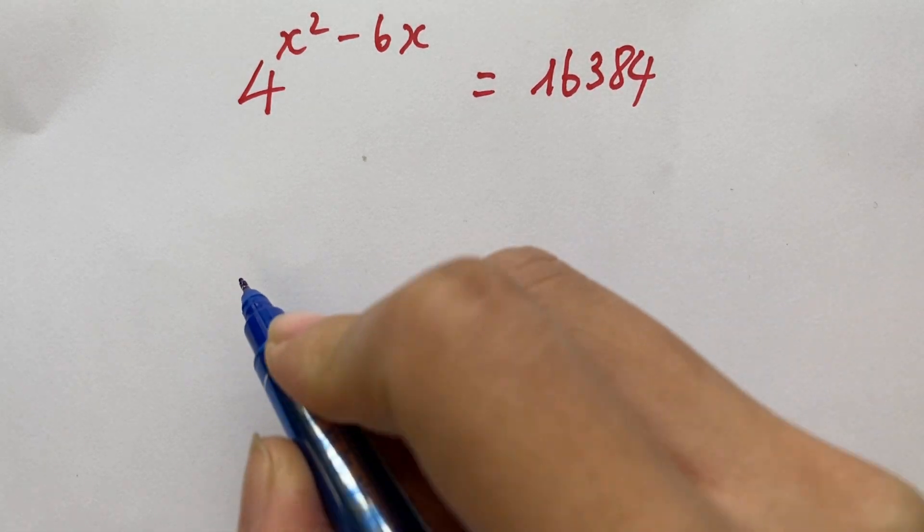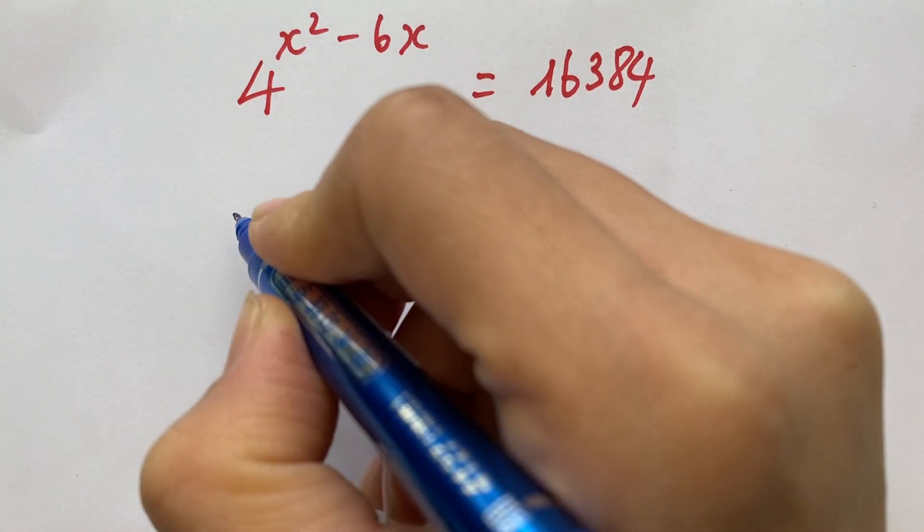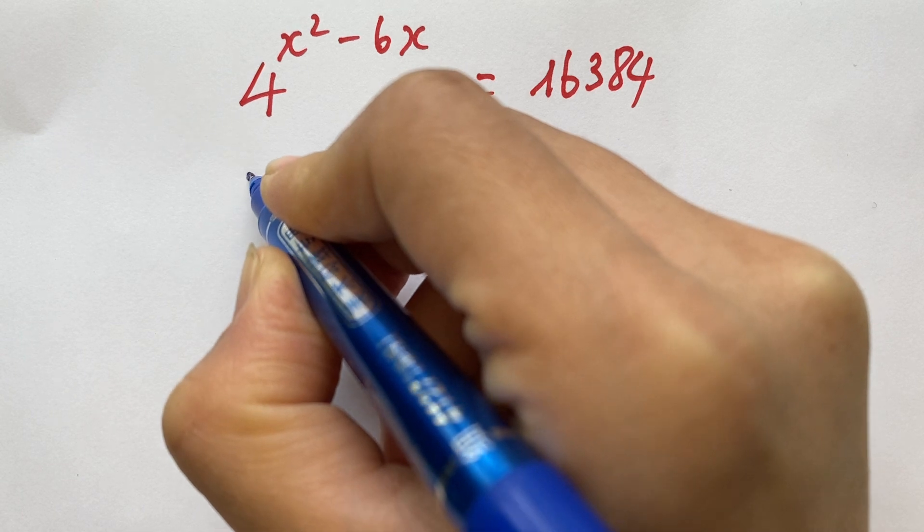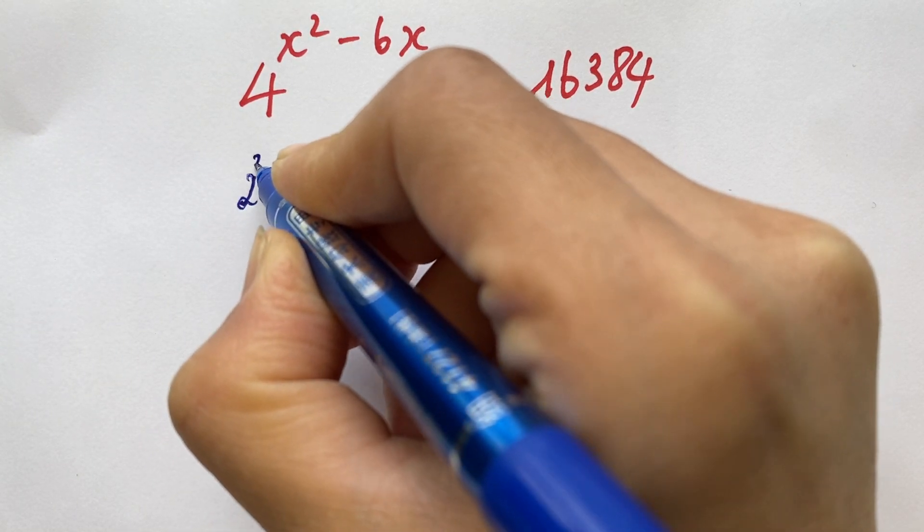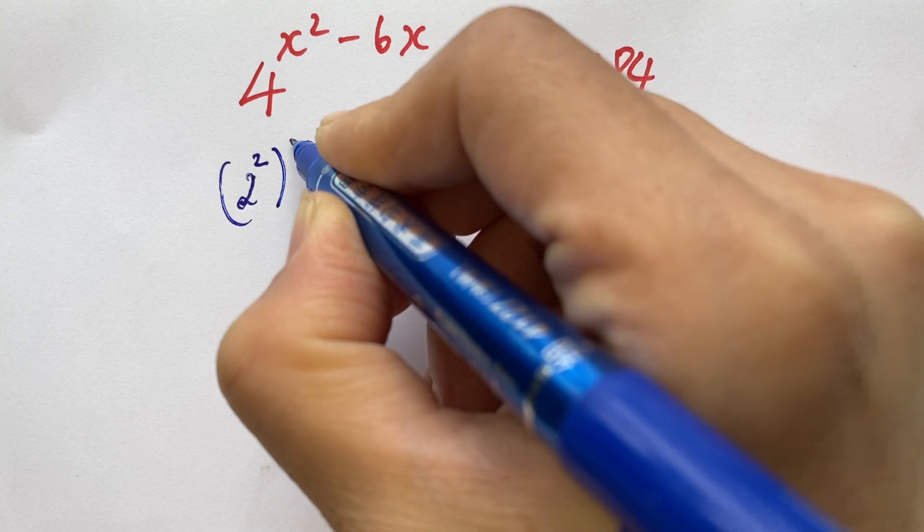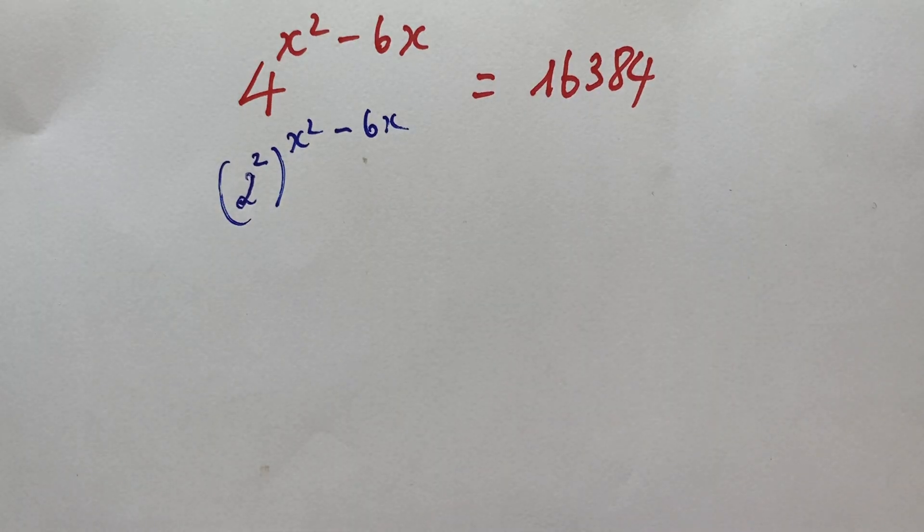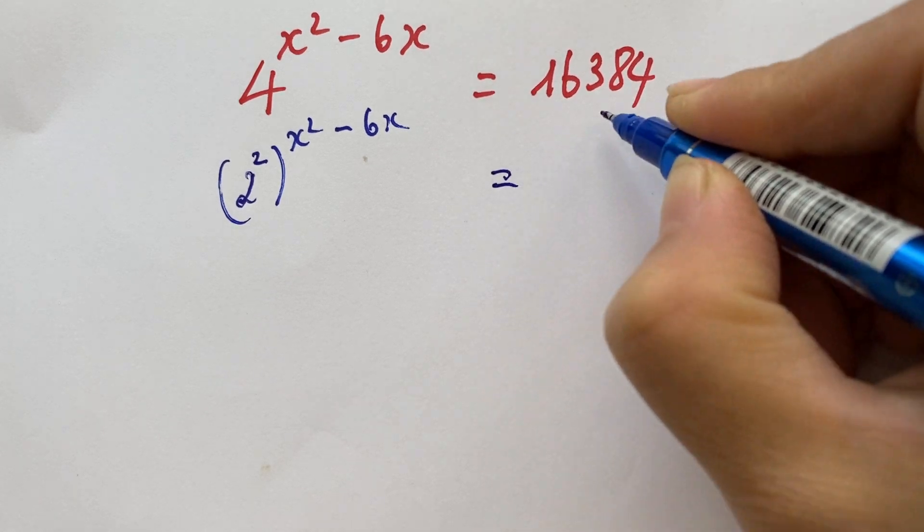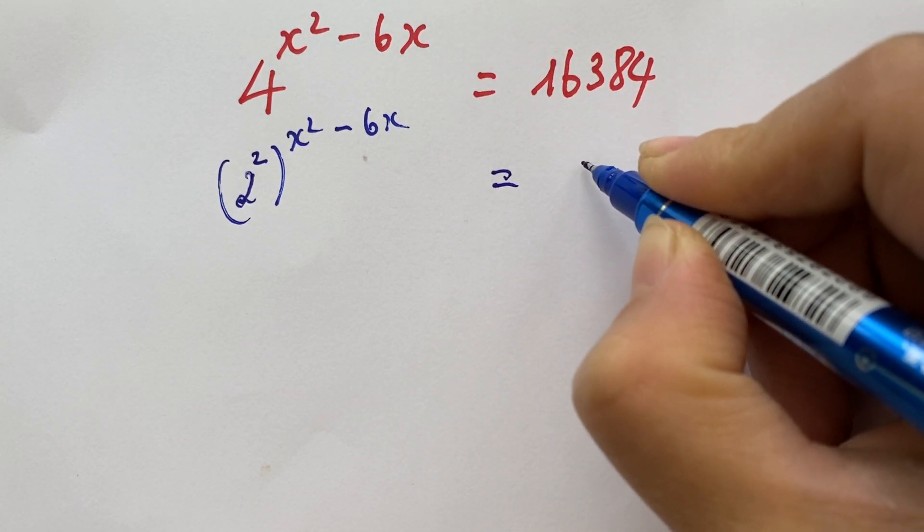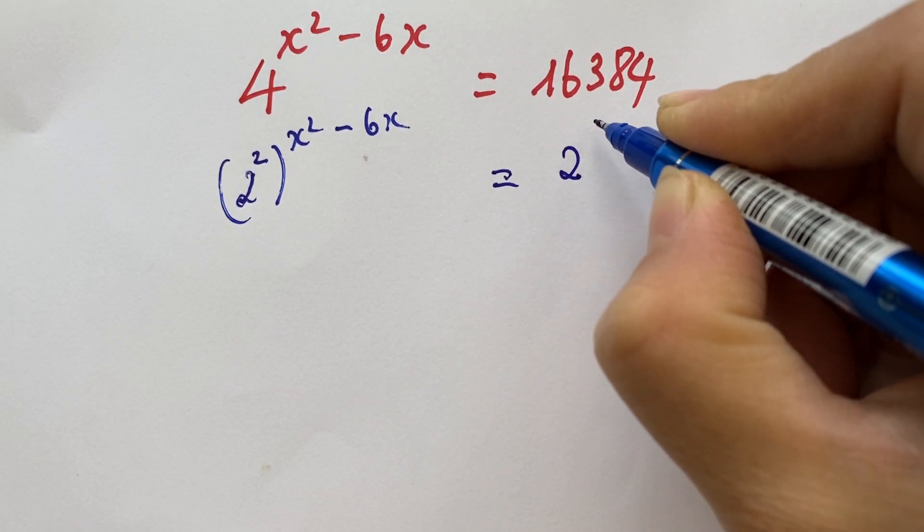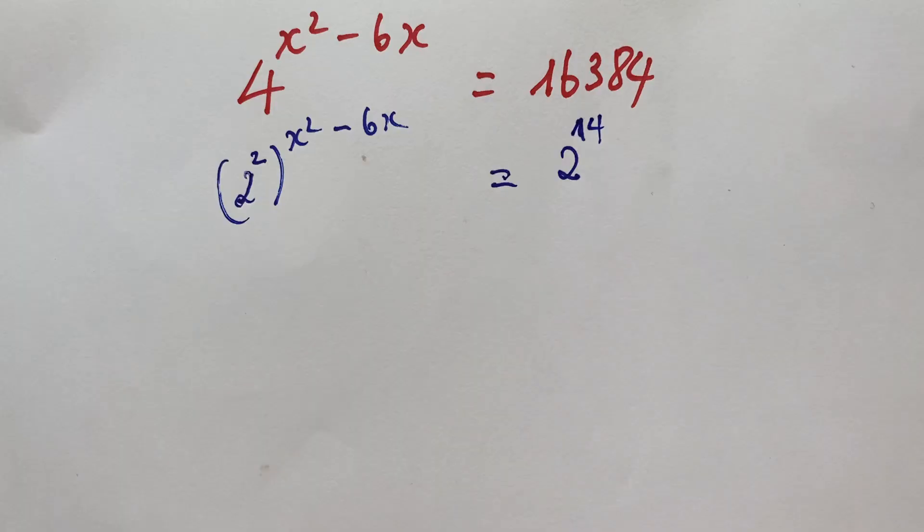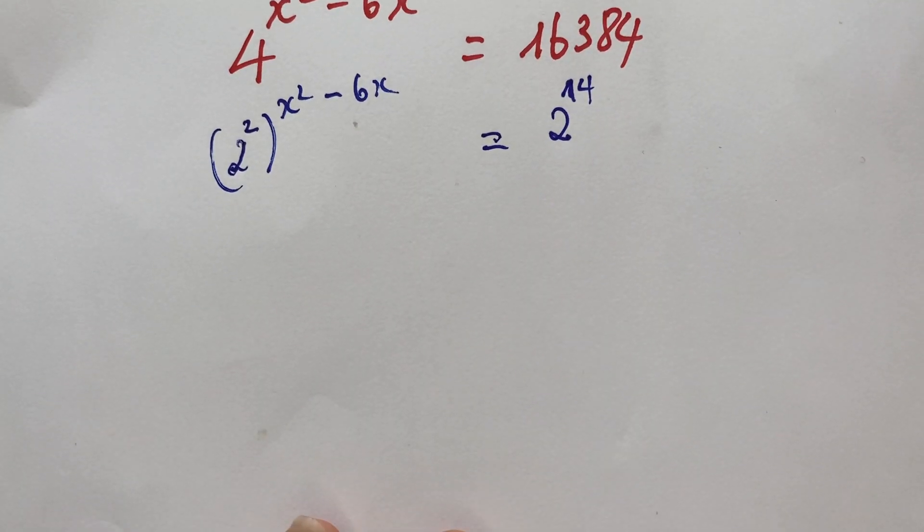You can rewrite 4 as 2 squared, so we have 2 squared to the power x squared minus 6x. This equals 2 to the power 14.